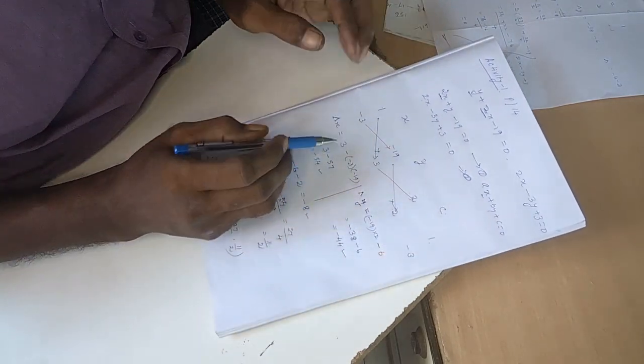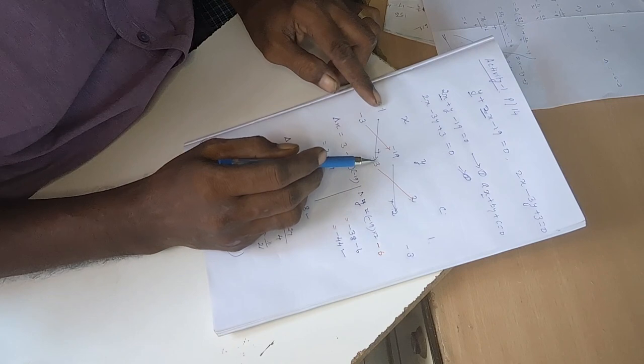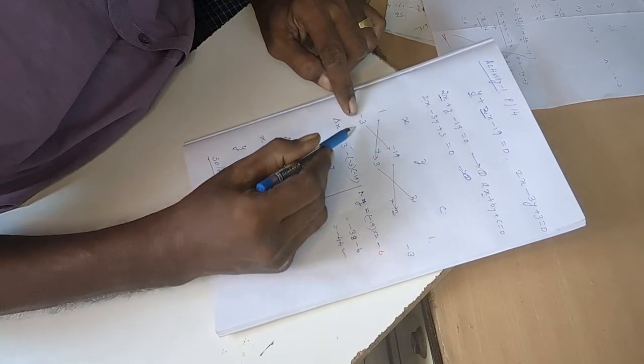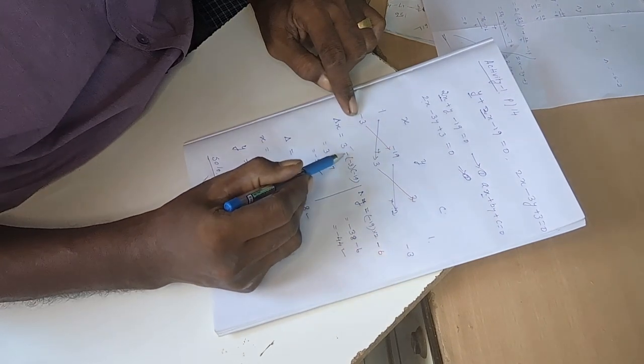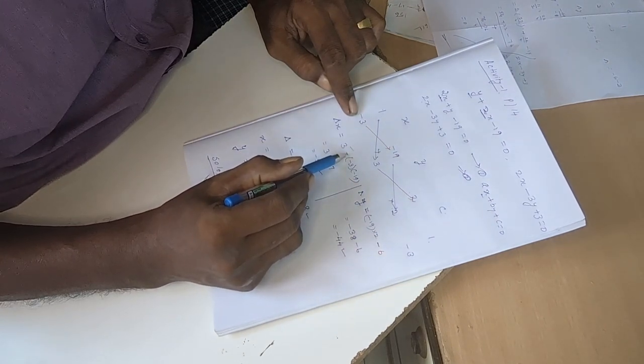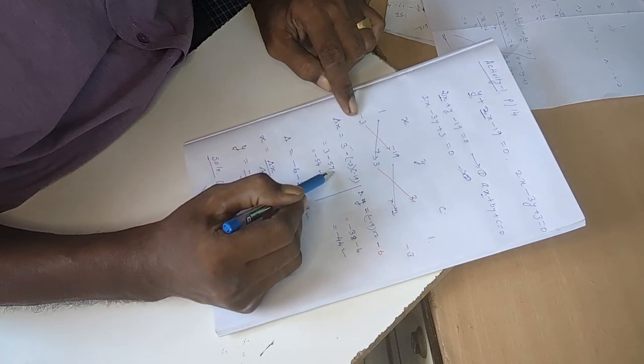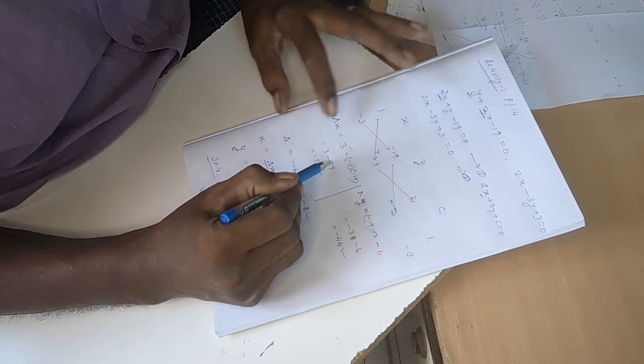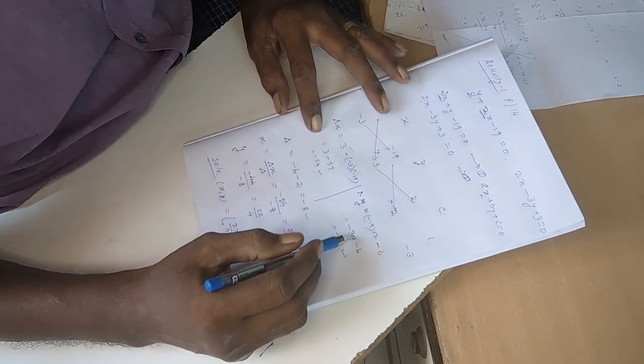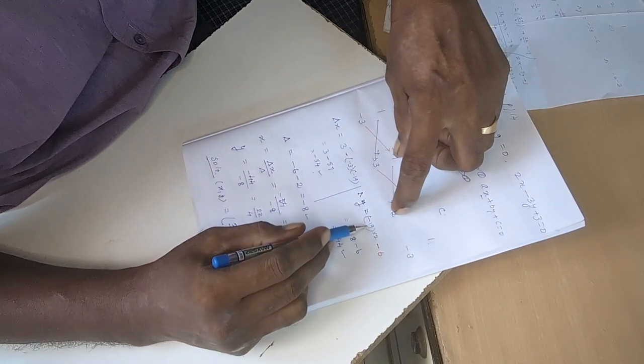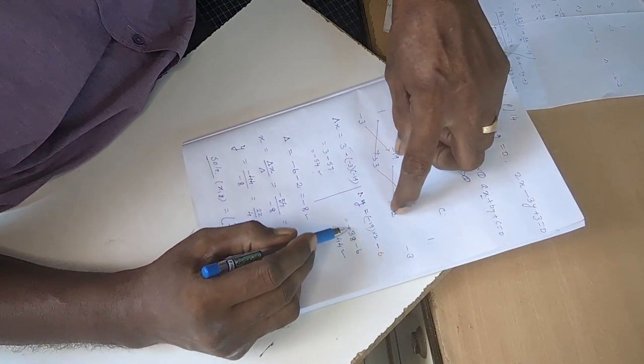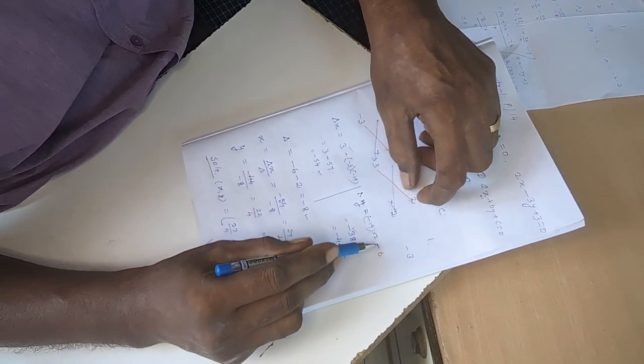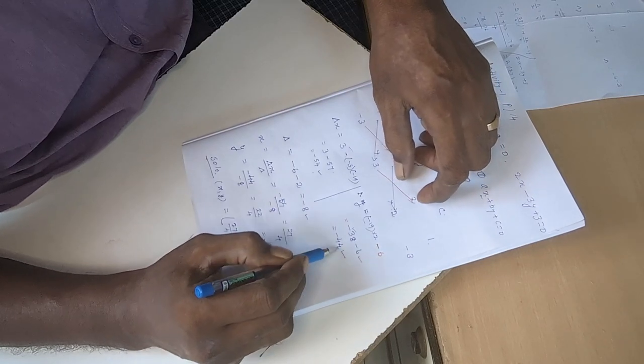Now we find out the value by applying the cross multiplication. 1 into 3 is 3. If you multiply down to up, put a negative sign. 3 into 19 is 57. Minus into minus is plus, but here is one minus, so minus 54. Same way, minus 19 into 2, here is minus, and we need minus, so put one minus: minus 6, so minus 44.